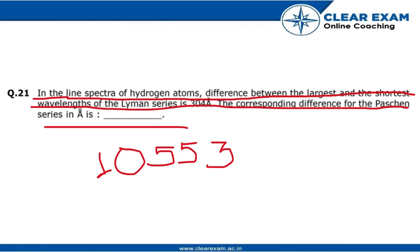Now, taking the ratio, we get lambda of Paschen and lambda of Lyman. We get the solution as 10553 Armstrong.